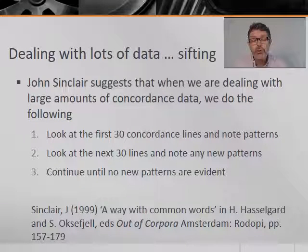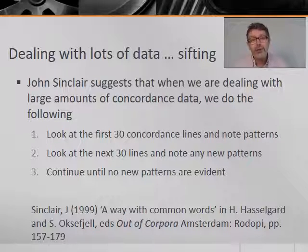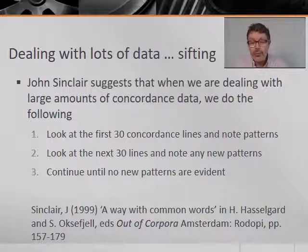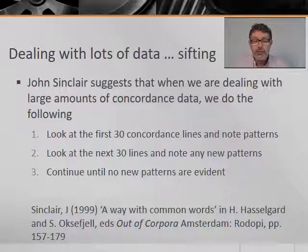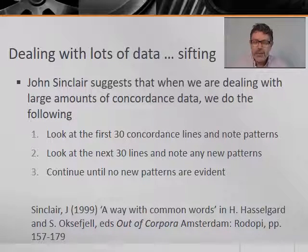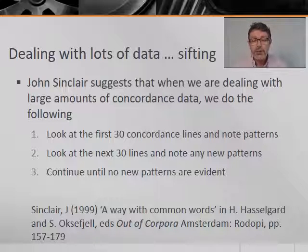But one problem with concordancing programmes is probably already becoming evident as we work through this example: there is a lot of data to get through. Once we start working manually with corpora of over 520 million words — the current size of COCA — we have literally thousands of examples of common words and expressions to deal with. So how do we cope with this super-abundance of data? One of the pioneers of corpus linguistics, Professor John Sinclair, suggested that when we are dealing with large amounts of concordance data, we do the following.